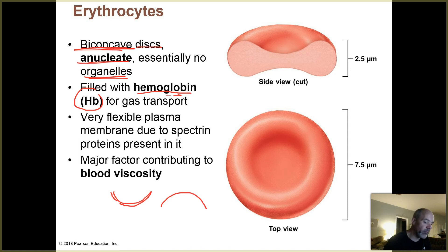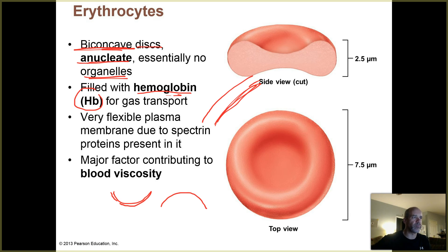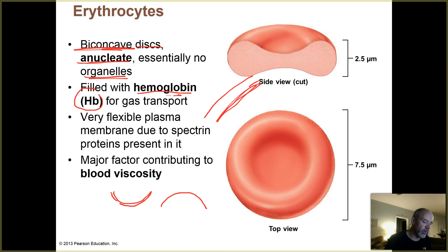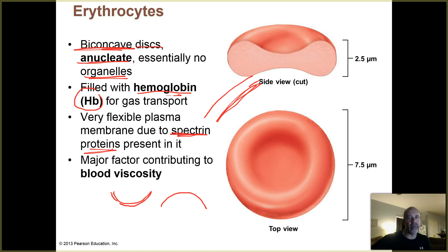Your erythrocytes are interesting because the smallest blood vessels in your body are called capillaries, and some of those capillaries that extend very deeply into your tissues are actually narrower than a typical red blood cell. Because of that, your red blood cells have to be very flexible in order to squeeze through those thinnest microscopic blood vessels. They're able to do that because of a protein present in the membranes of erythrocytes called spectrin, which allows them to be squishier and more flexible than most other cell types.